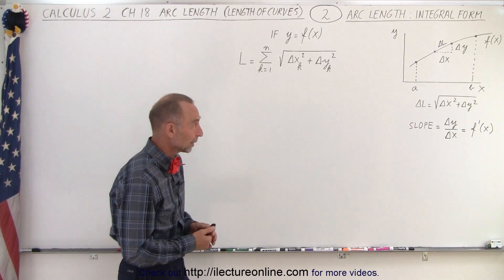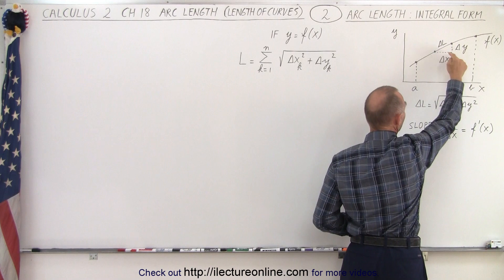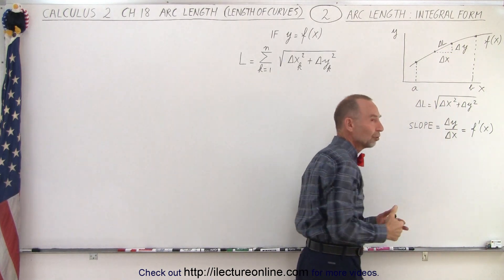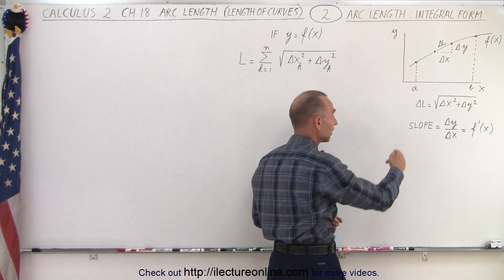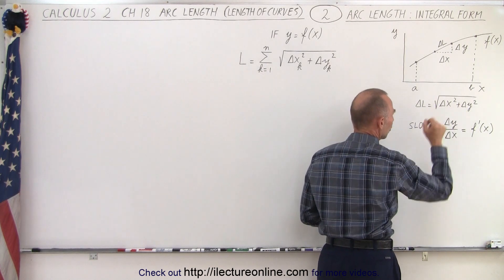Again we're starting at the same point we did on the last video that we realized that a small section on the curve, let's call it delta L, can be approximated using the Pythagorean theorem by saying that delta L is equal to the square root of the change in x squared plus the change in y squared.